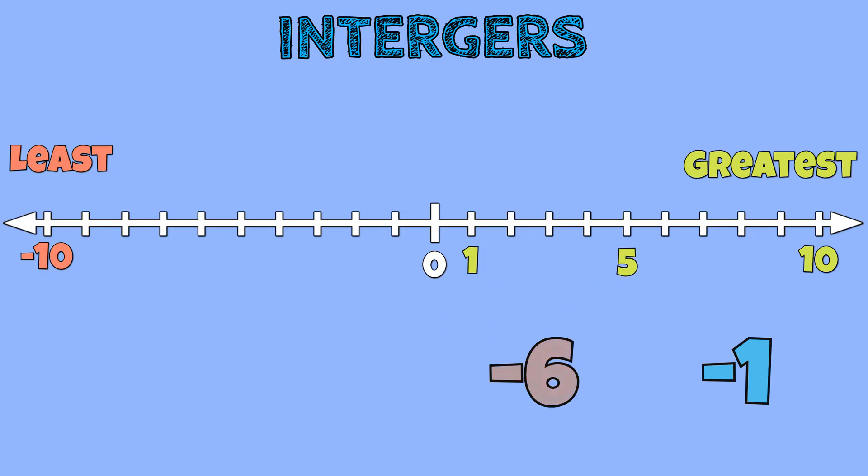Since we have negative 6, we will move 6 units to the left of 0. Since we also have negative 1, we will move 1 unit to the left of 0.